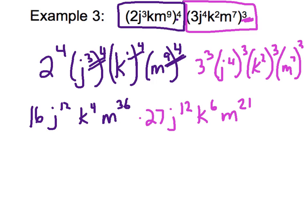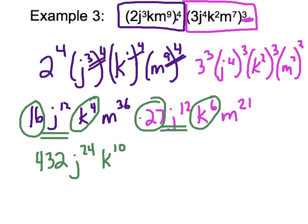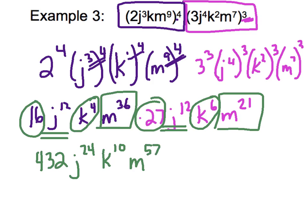Last but not least, I'm going to combine things that are alike. 16 and 27 are both regular numbers — 16 times 27 gives me 432. j to the 12th times j to the 12th — here's our product of powers rule — we add the exponents, giving us j to the 24th power. k to the 4th times k to the 6th — add those exponents — k to the 10th. m to the 36th times m to the 21st — same base number being multiplied together, keep the base, add the exponents — we get m to the 57th power. That is some serious power!